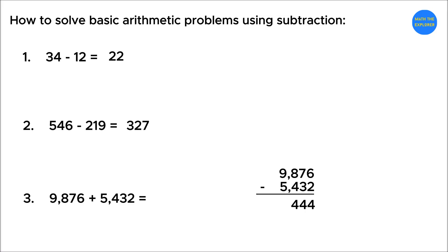Now, subtract the 1000's place, 9 minus 5 equals 4. Putting all the digits together, the final answer is 4,444.